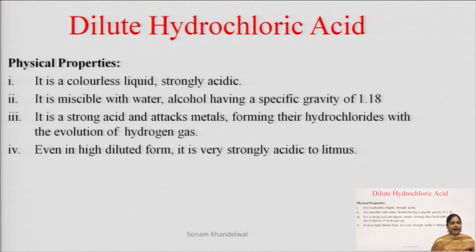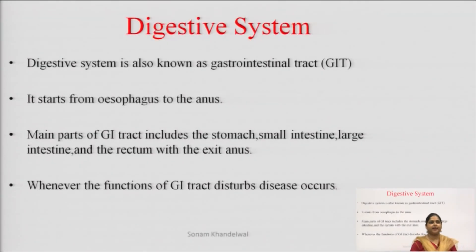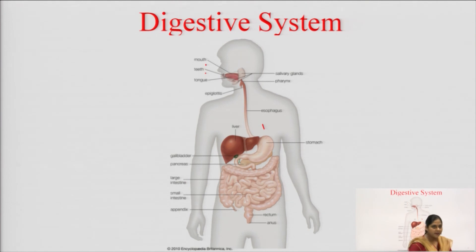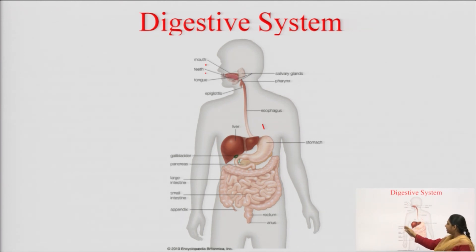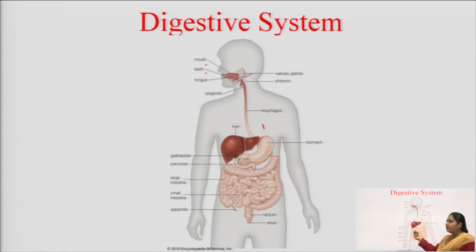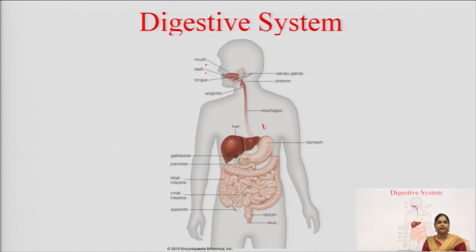I would like to rewind once again what I have taught you. Digestive system, it is also known as the GIT tract — esophagus se start hota hai aur anus pe end hota hai. Different parts of our GIT tract: stomach, small intestine, large intestine, rectum, and anus. Iske alawa, if any function of the GIT tract is disturbed, to uske wajah se GIT disease hoti hai. Jab bhi in ki functioning alter hogi, matlab normal se hat jayegi ya kharab ho jaati hai, to uske wajah se humein GIT disease hoti hai — jinhe hum gastrointestinal tract diseases bhi bolte hain.